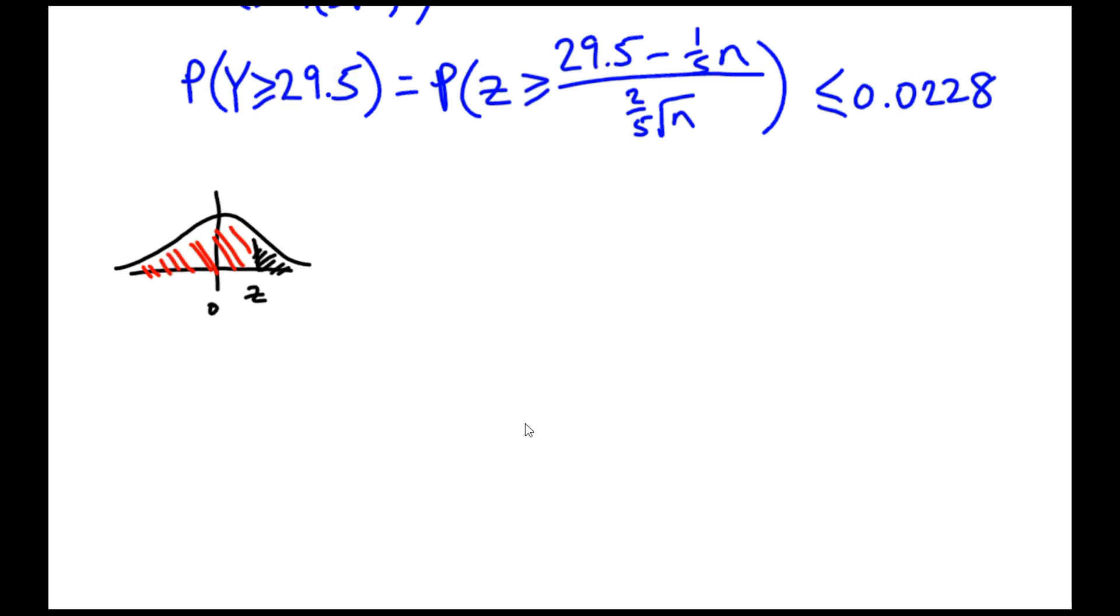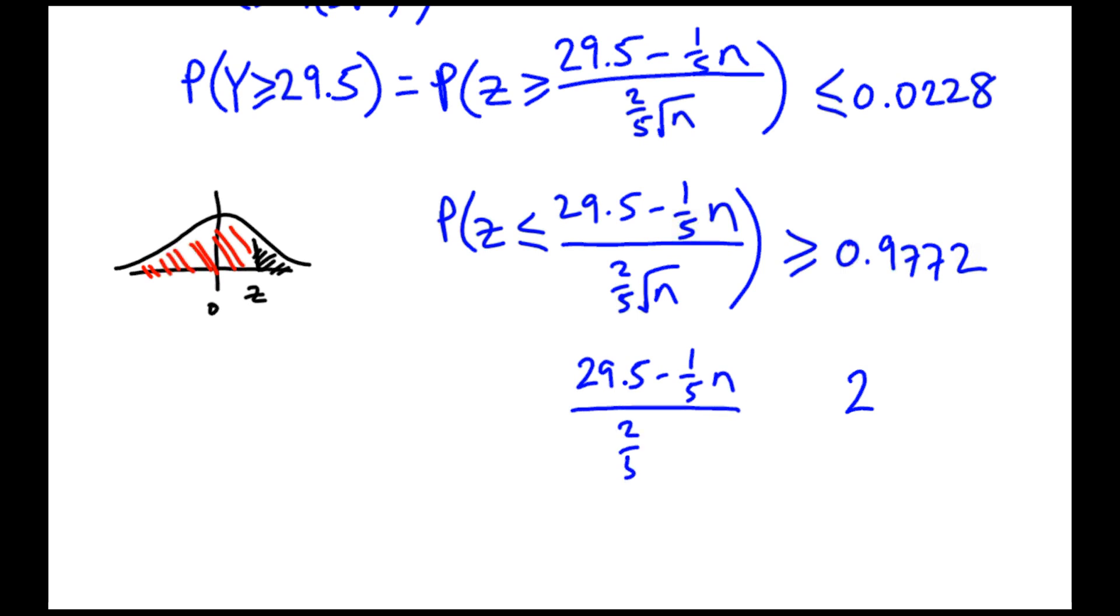It would be the probability that z is less than or equal to this particular value is greater than or equal to one-minus, should get me that red probability, 0.9772. That's looking even more familiar. I know the z-score for 0.9772, and that z-score is 2. So this standardisation should roughly lead me to the number 2.